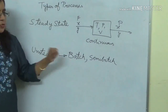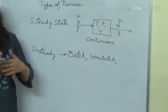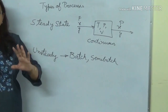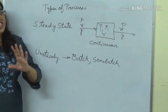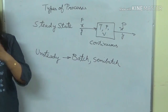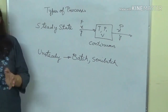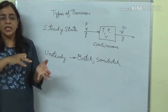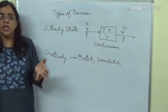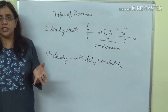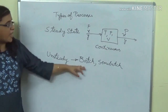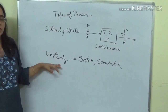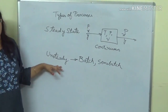Batch and semi-batch processes are inherently unsteady state. In a batch reactor, you charge the reactants and with time more and more reaction takes place, so the composition is changing. If it is an exothermic reaction, the temperature may rise. So temperature and pressure levels are also changing. In a batch or semi-batch process, it is inherently unsteady state because process conditions are changing with respect to time.